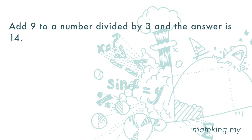Add 9 to a number divided by 3, and the answer is 14. We write 9 plus a number divided by 3. We do not know the number, so it is a variable. Let's use x to represent this variable. This number is divided by 3, so we have x over 3.